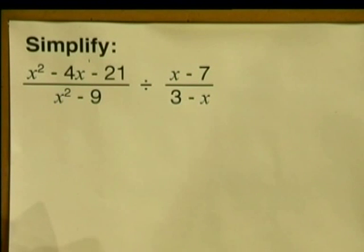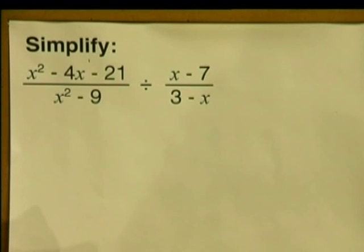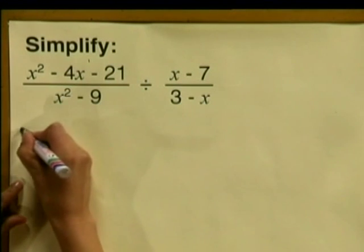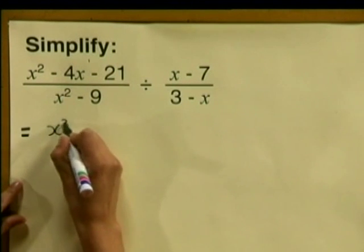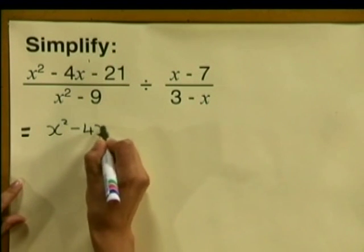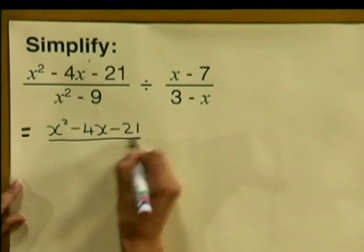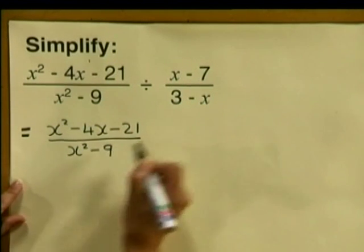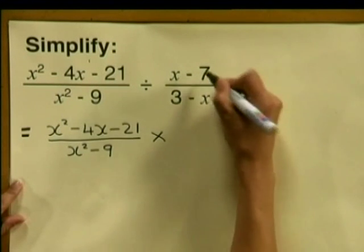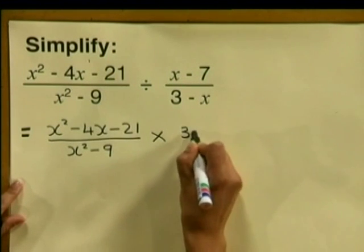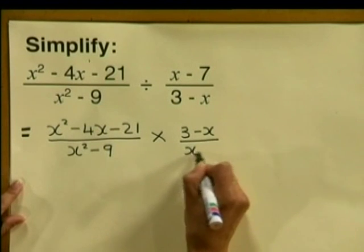Simplify X squared minus 4X minus 21, all divided by X squared minus 9, divided by X minus 7, all divided by 3 minus X. The first thing we do is apply the division rule. We flip over and multiply. So we write X squared minus 4X minus 21, all divided by X squared minus 9, then a multiplication sign and we flip to write 3 minus X divided by X minus 7.